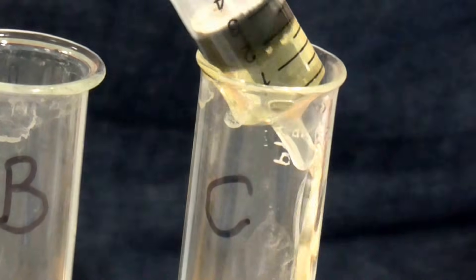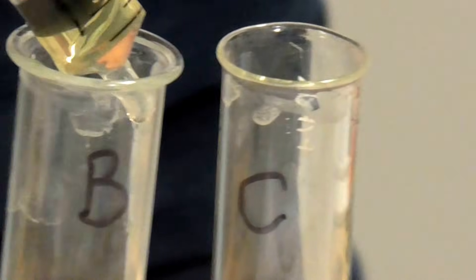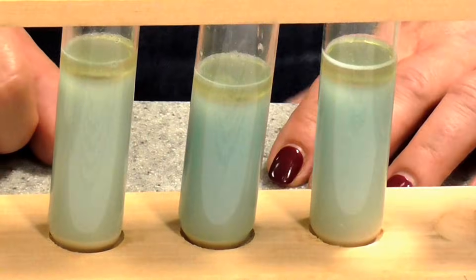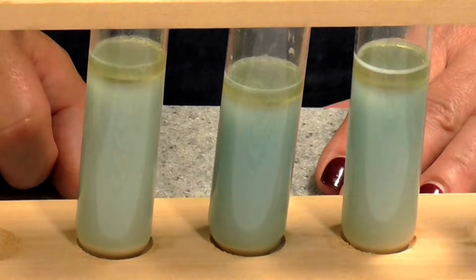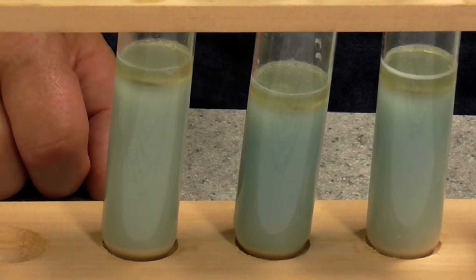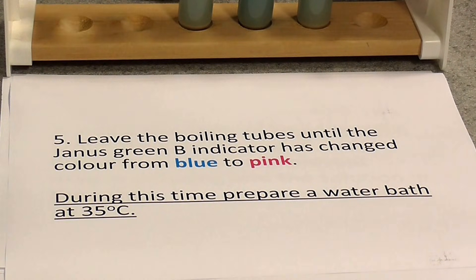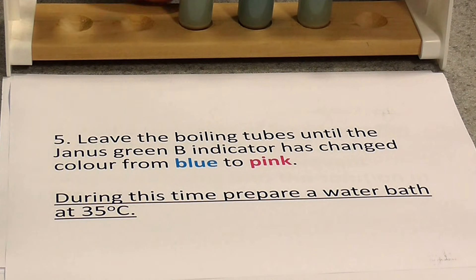The purpose of the liquid paraffin or oil is to prevent oxygen from diffusing in from the atmosphere — we want conditions in those tubes to become anaerobic. Put these tubes to one side and wait until they change colour. The yeast will now be respiring using the sugars and using up the oxygen, and eventually the indicator will change from its bluey colour to pink to show that conditions are anaerobic.